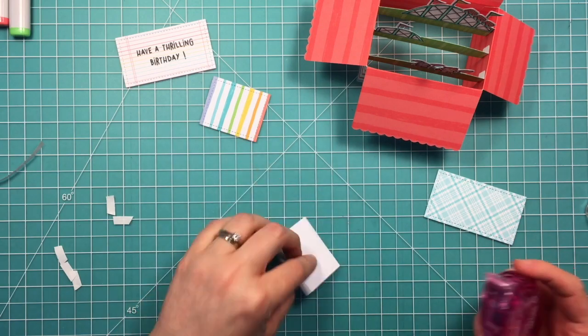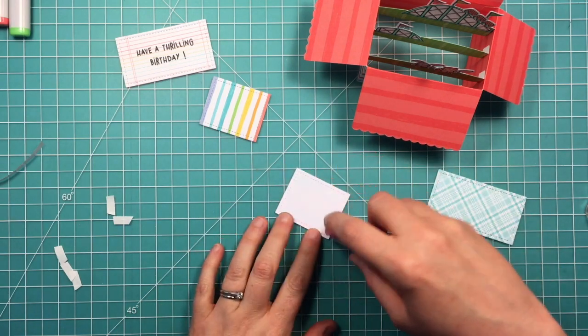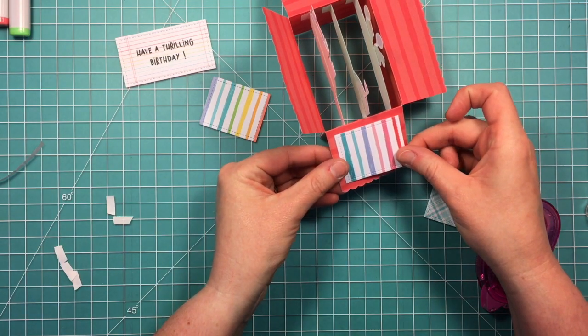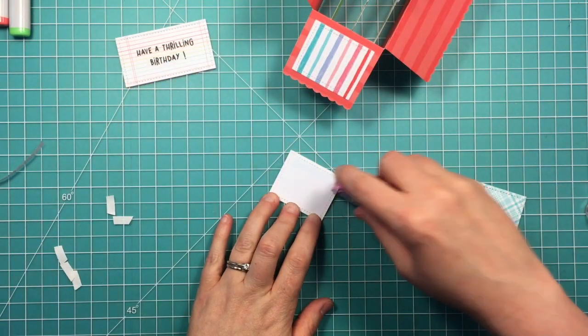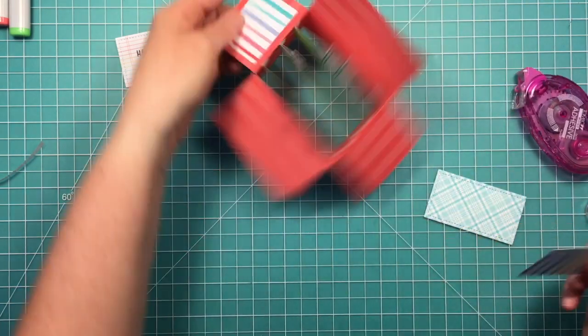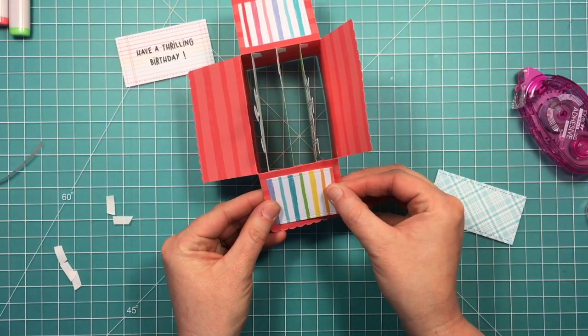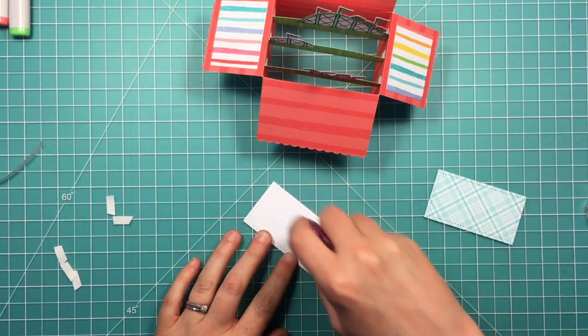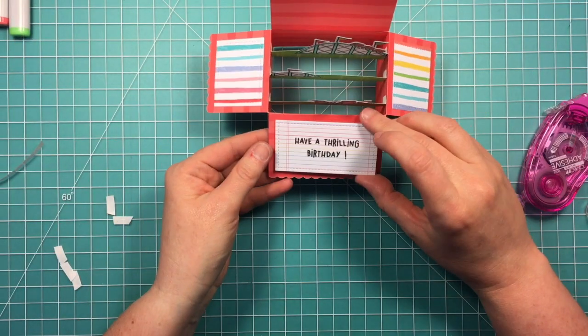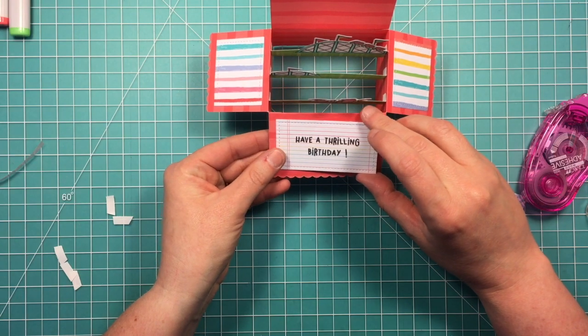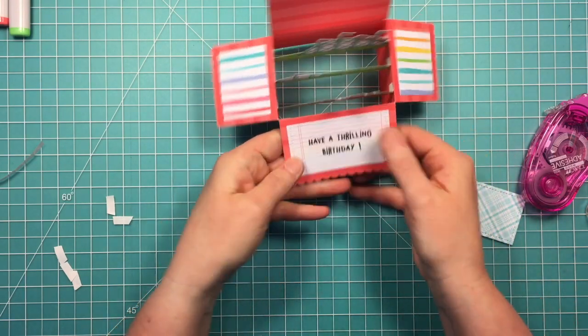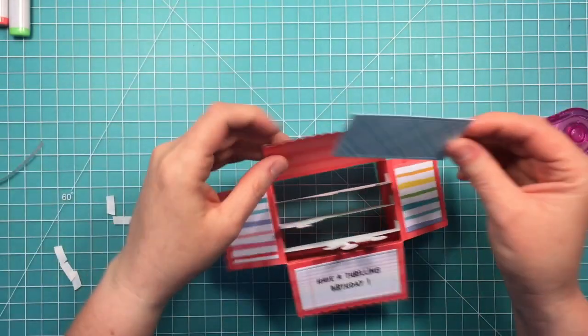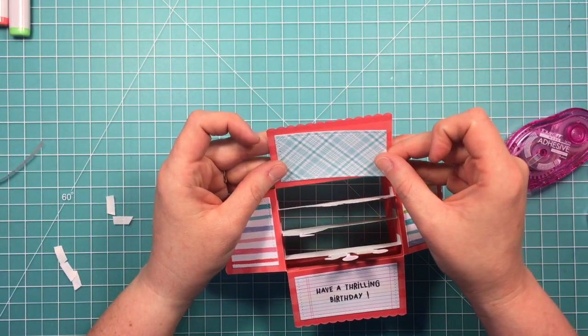Now I'm just going to add the little panels to the flaps and I've got the rainbow stripes. I'm going to put those on the sides and I cut these in such a way that the stripes go the opposite direction of the stripes on the inside of the box, which I just think is kind of nice. The sentiment panel will go on that front flap. And then that blue plaid panel is going to go on the back, sort of like the sky behind the roller coaster scene.